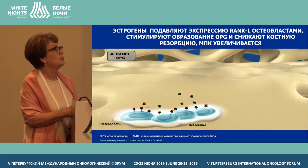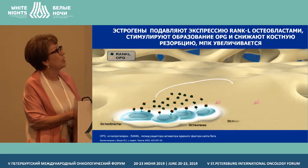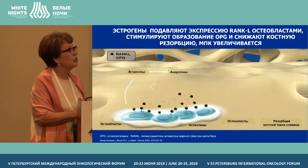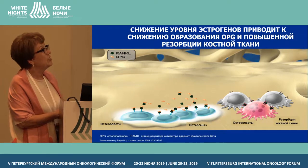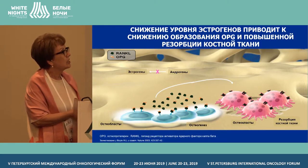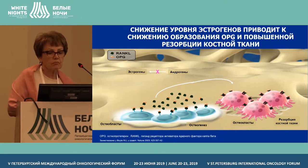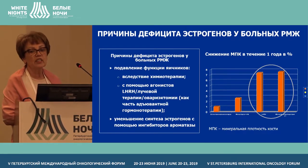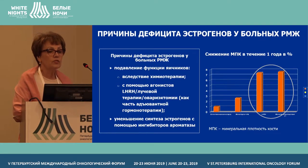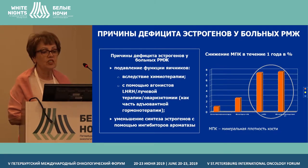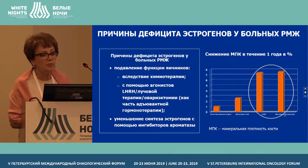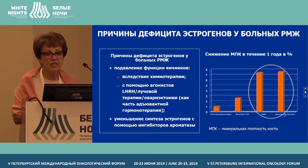Estrogens in the body are important, playing a major role in suppressing expression of RANK ligand by osteoblasts, stimulating creation of OPG, and reducing bone resorption. With low levels of estrogens, there is less OPG production, elevation of bone tissue resorption, and ongoing bone destruction. The causes of estrogen deficit in early breast cancer include suppression of ovaries due to chemotherapy, LHRH antagonists, ovariectomy, hormone therapy with adjuvant aromatase inhibitors, and anti-estrogens.